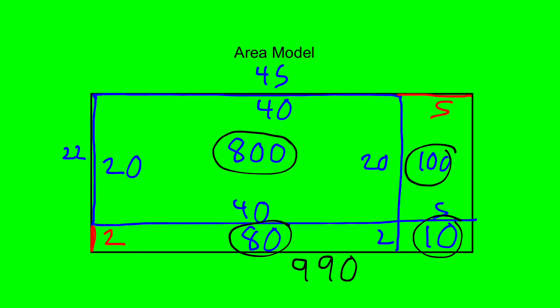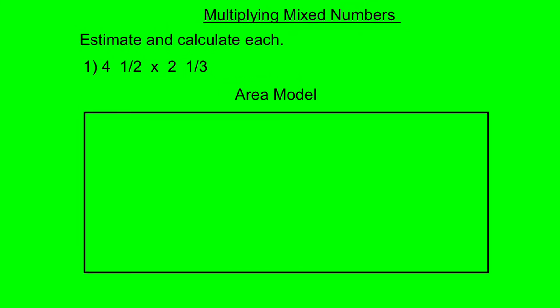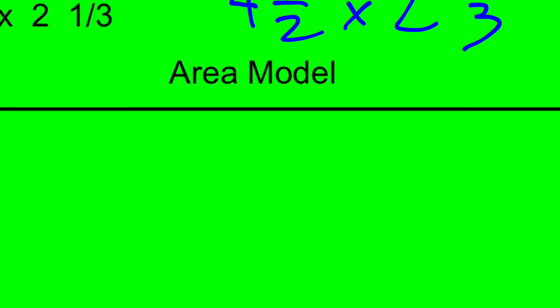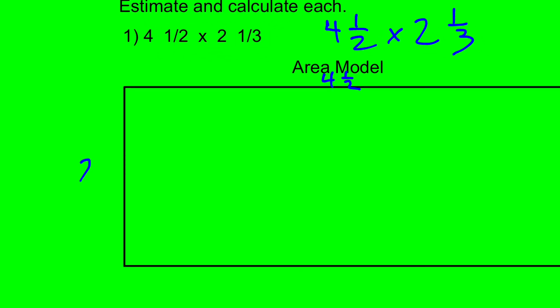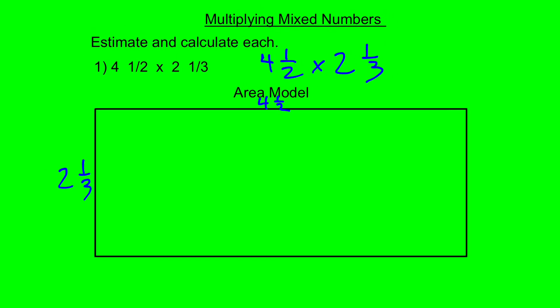This is actually a visual representation of the grid method. Using this area model can help us multiply mixed numbers. So what we did next — skipping ahead a bit — we did this same idea with multiplying mixed numbers. We did 4.5 times 2.3, and the long side of this rectangle would be 4.5 and the short side would be 2.3. But I'm not going to leave them like that — I'm going to break them into smaller parts.